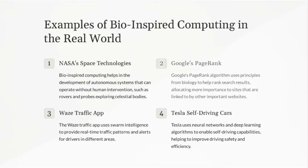Google's PageRank. Google's PageRank algorithm uses principles from biology to help rank search results, allocating more importance to sites that are linked to by other important websites.